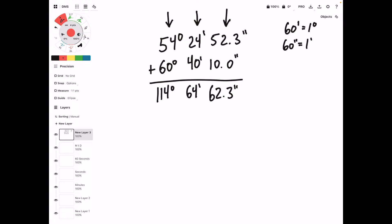Okay, in this step we need to get rid of the excess seconds and minutes. So we're going to subtract 60 seconds here, but when we do that, we need to add 1 minute so that everything is still equal to the same angle value. We can rewrite this angle as 114 degrees, 65 minutes, and 2.3 seconds.